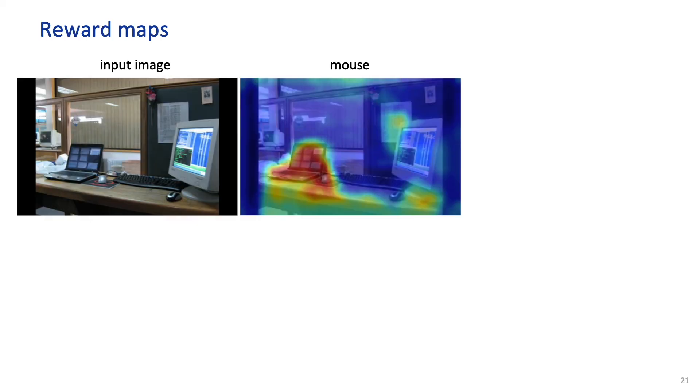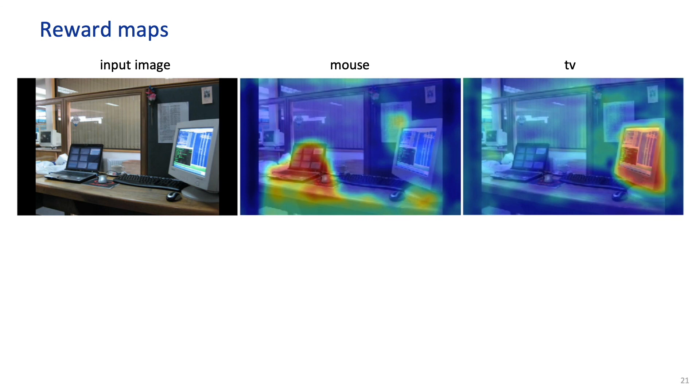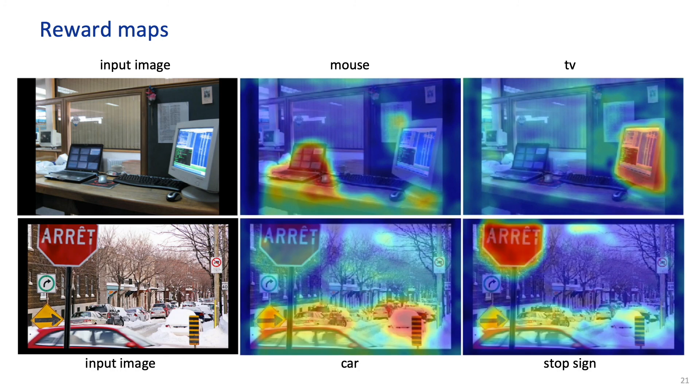Here we visualize some of the reward maps recovered by our model. As you can see, high reward is assigned to the laptop when searching for a mouse and to the monitor when searching for a TV. That's because mouse and laptop, TV and monitor are highly correlated objects. This is similar for the car and stop sign category.